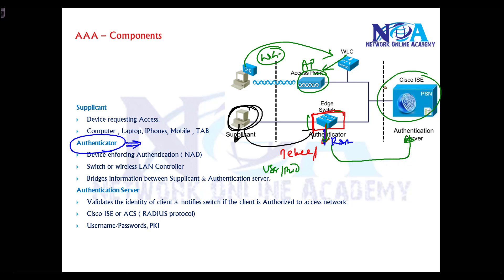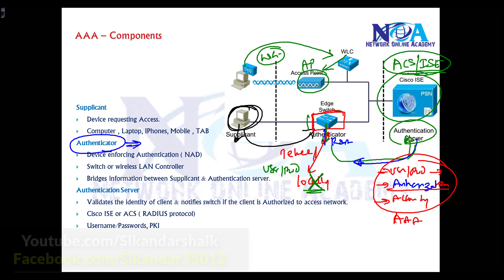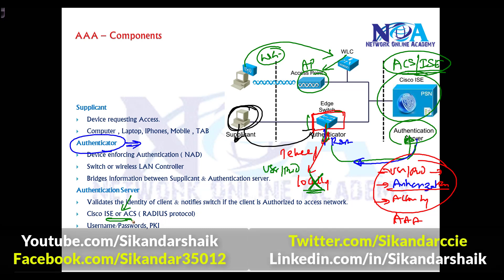The authenticator — the switch or access point — does not authenticate on its own. It simply forwards the credentials to another device called the Authentication Server. This authentication server can be ACS or ISE servers, similar to Active Directory servers, which store all the username, password credentials, and client information. They are also responsible for authorization, pushing authorization policies to the device, and keeping track of accounting. The complete AAA — authentication, authorization, and accounting — is done by these authentication servers using either RADIUS or TACACS+ protocols, based on username credentials or certificates.